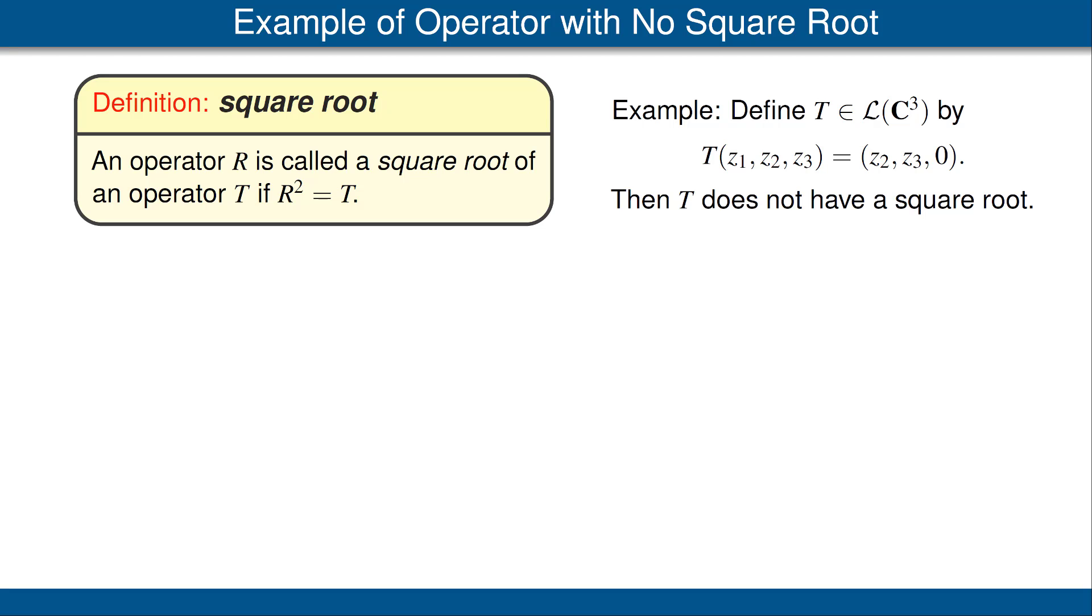That's sort of intuitive because T is shifting over by one slot to the left, so the square root should be shifting over by half a slot, which makes no sense. However, that intuition is very far from a proof, so you should pause this video and prove to yourself that this operator T does not have a square root.